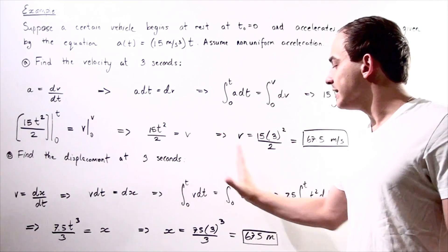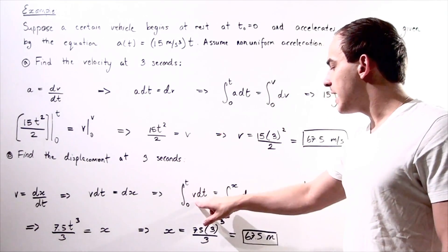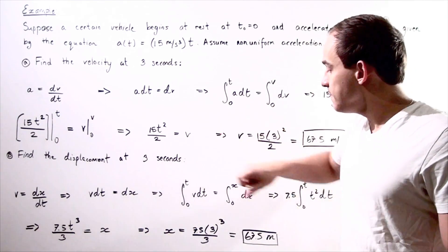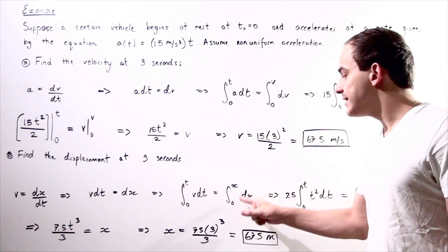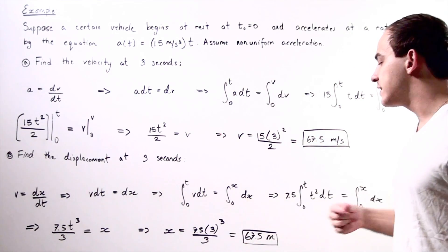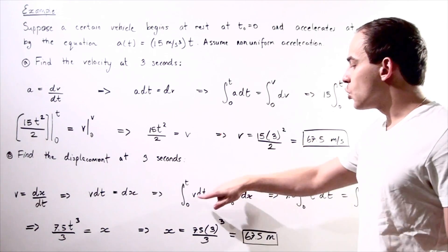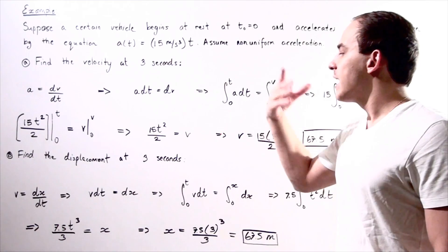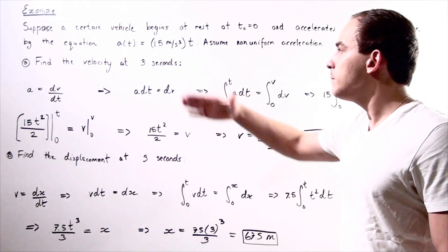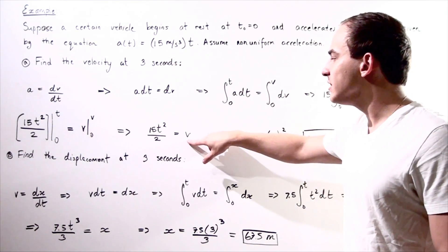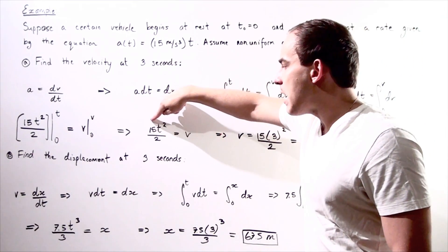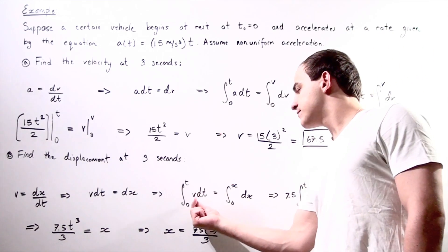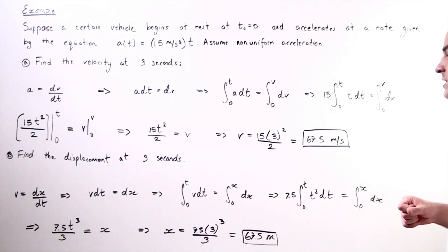The left side is the integral of v times dt from zero to final time t, and the right side is the integral from zero to final position x of dx. We replace the v term using our result from part A: velocity equals 7.5t squared. So we can replace velocity with 7.5t squared in our integral.